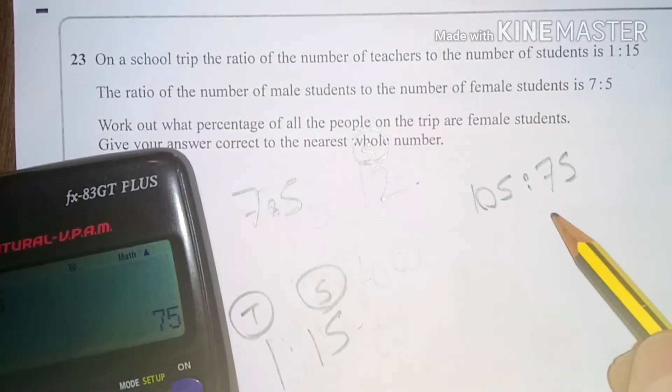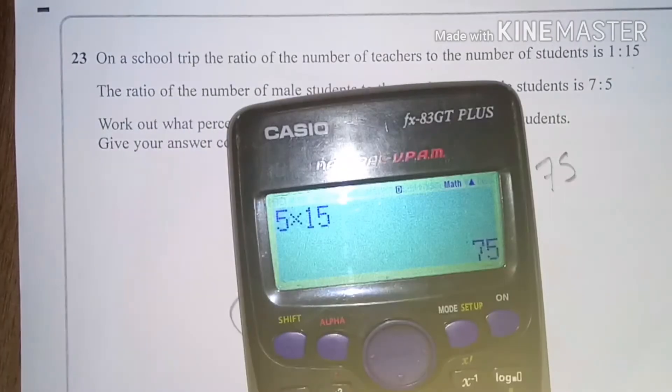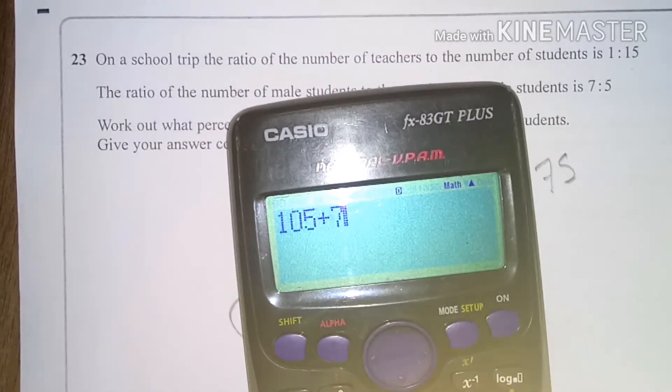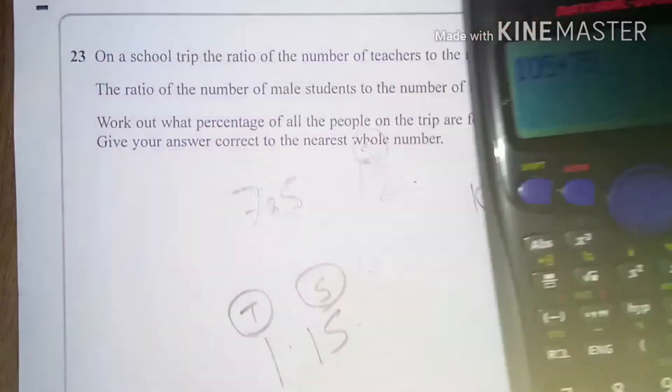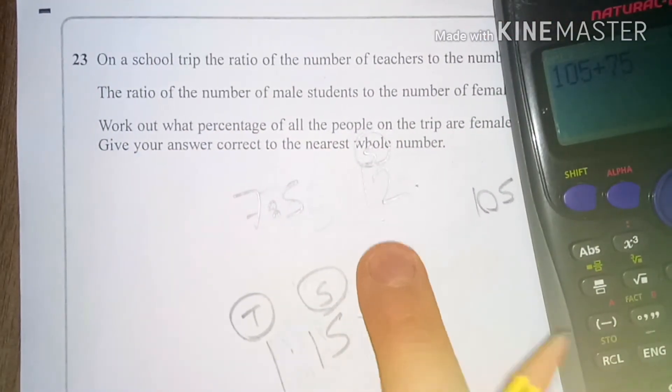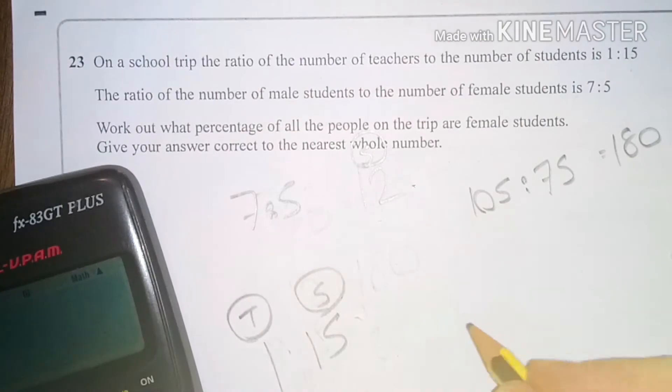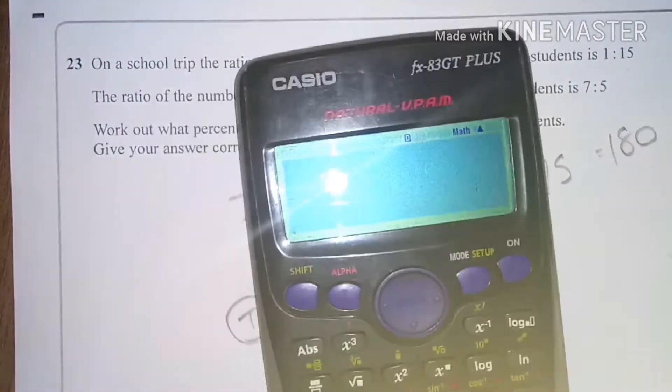Which will give me, if I add it up, 105 plus 75, which is 180. Okay, and this one here, I'm actually going to times by 12. So this is going to be 12 to 15 times 12 to